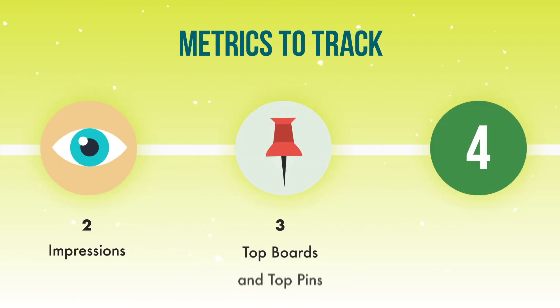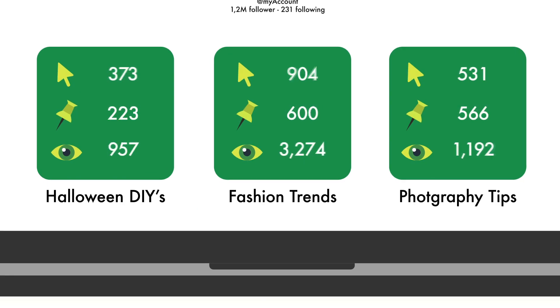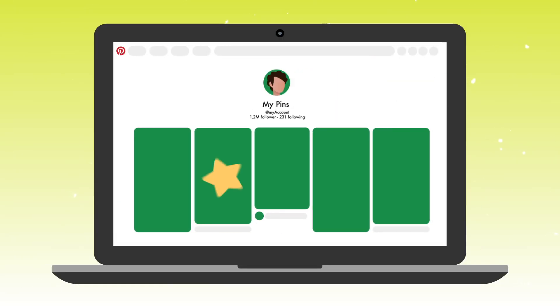The next metric I like looking at is top boards and top pins. If you are using content marketing, this is typically something you'll track. We want to see which boards are generating the most clicks, saves, and impressions, and we want to see which pins are generating the most clicks, saves, and impressions. When we look at which boards are performing the best, we can make a decision about what content we should be promoting. When we look at the pins that are performing the best, we can use that information to help us design more pins that are going to capture the attention we want.